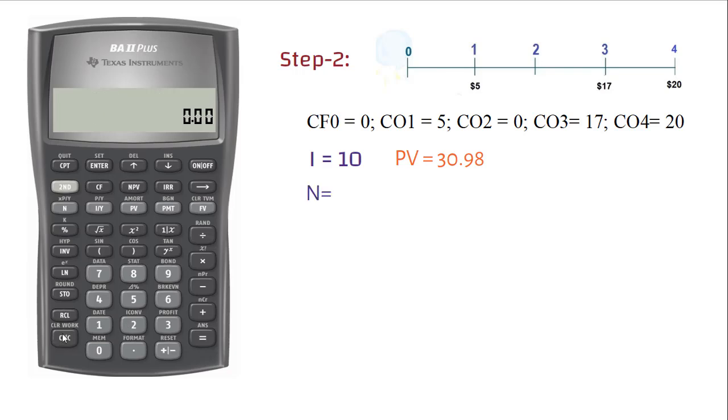Enter 4 in N by pressing 4 and then press N. Press RCL and 2 to get back the previously saved number and press negative and then press PV.